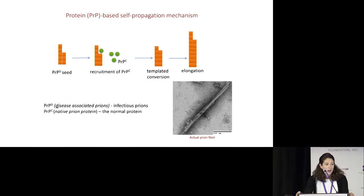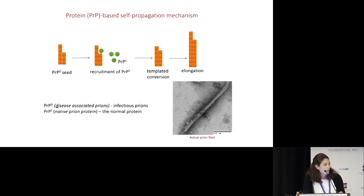So how does a misfolded protein become an infectious agent with the ability to amplify itself in the body? In the case of prions, that misfolded protein is able to bind to the normally folded protein that everybody expresses in their body — normally folded PrP — and it's able to corrupt its structure such that the normal protein changes to look exactly like the infectious prions.